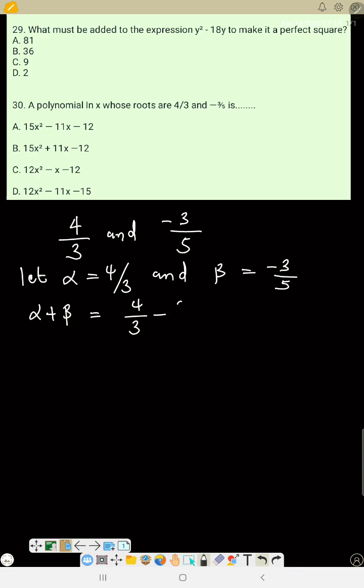Alpha plus beta will be 4 over 3 minus 3 over 5. The LCM is 15, so 5 times 4 equals 20 minus 3 times 3 equals 9, giving 20 minus 9 equals 11 over 15. Alpha beta is 4 over 3 times minus 3 over 5, which cancels to minus 4 over 5.